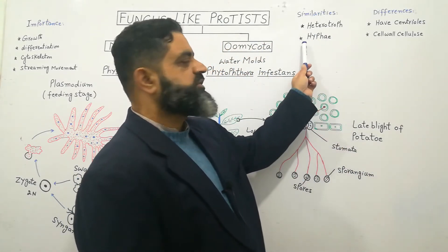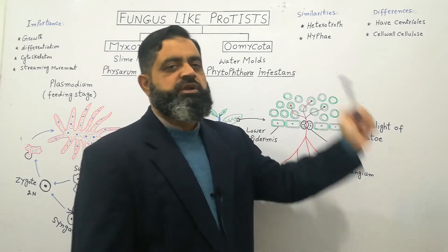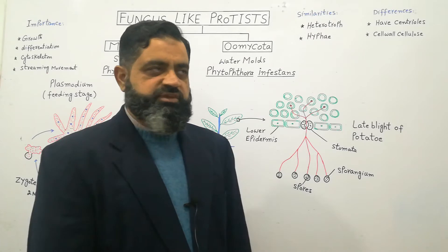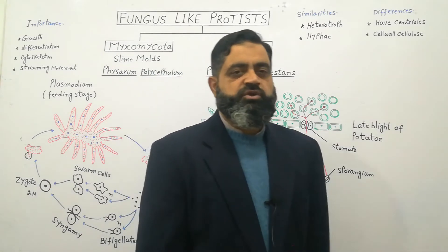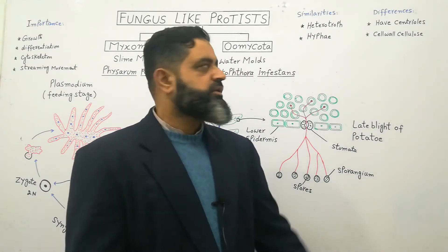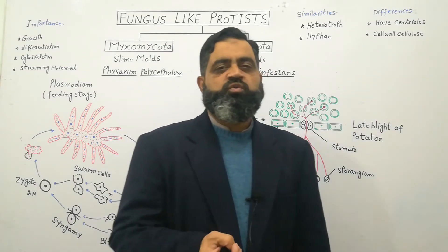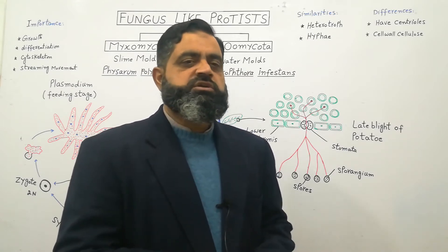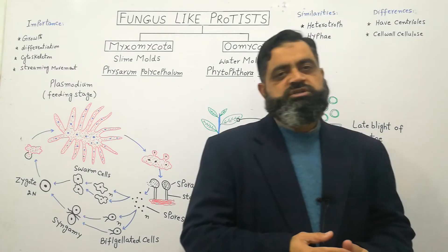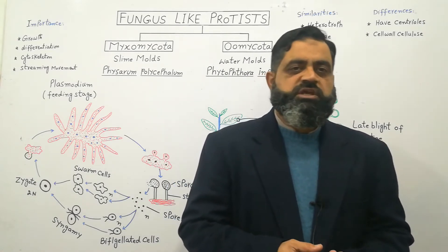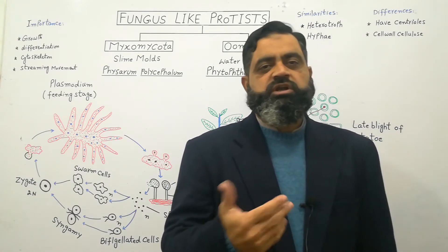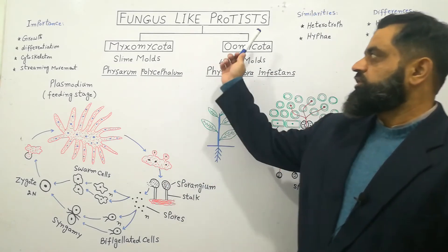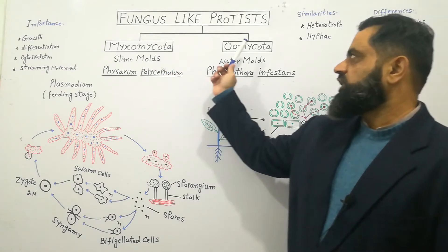To summarize: the two similarities with fungi are that they are heterotrophic and their plant body is made up of hyphae. The two differences are that they have centrioles while fungi do not, and their cell wall is made of cellulose while fungi have chitin. Because of these differences, they are grouped into Kingdom Protista. Today we will discuss two groups: Myxomycota and Oomycota.